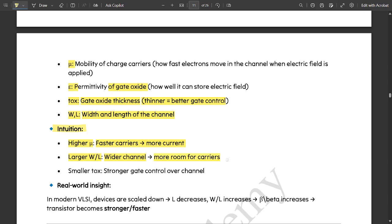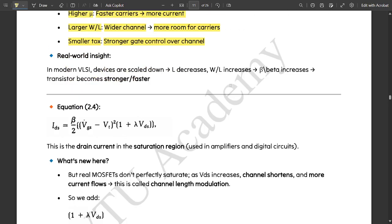If the width and length value is large, the area would be sufficiently very large in size, which would be leading to the more room for the carriers to enter. Smaller the value of TOX, stronger the gate control over the channel. These are some of the takeaways or the intuitions which you need to be taking into consideration.